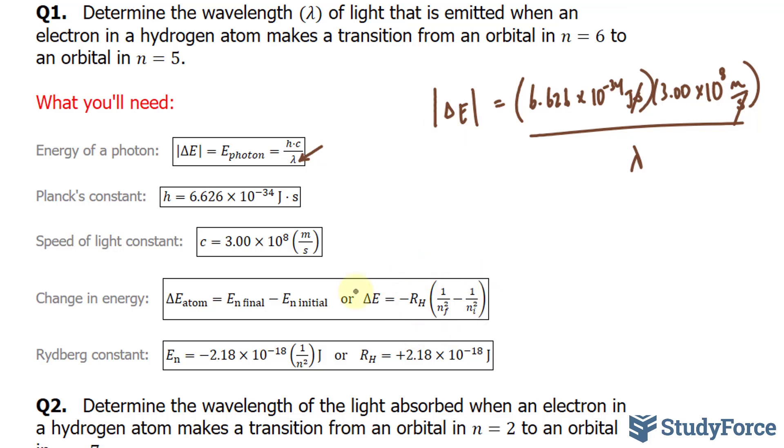We'll use the Rydberg equation where delta E is equal to negative r sub h, that's right there. So we have negative 2.18 times 10 to the power of negative 18 joules, bracket, 1 over n and we're looking for n final here. So 5 raised to the power of 2 minus 1 over 6 raised to the power of 2.